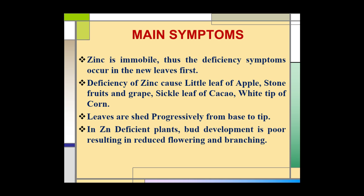Zinc deficiency causes little leaves of apple, stone fruits, and grapes; sickle leaves of cacao; and white tip of corn. Leaves are shed progressively from base to tip in zinc-deficient plants. Bud development is poor in zinc-deficient plants, resulting in reduced flowering and branching.